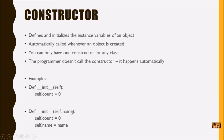The constructor defines and initializes the instance variables of an object. It is automatically called whenever an object is created, meaning the programmer doesn't call the constructor — there's no line of code in your functions that invokes it. You can only have one constructor per class. The name is always two underscores, init, two underscores. If you're having a problem where things aren't defined, check here first — a missing underscore is a common error.